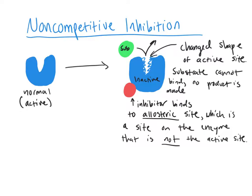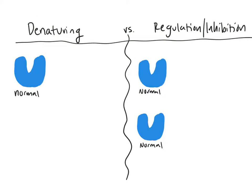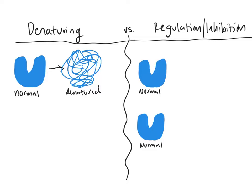I definitely want to mention that even though the active site is being changed here, it's not like denaturing where it's permanent — this is a reversible process. Let's take a look and compare denaturing to regulation or inhibition. Denaturing is when you take a normal enzyme and you completely destroy it. As you can see in the denatured protein, the active site has changed, but what's different is that the damage is permanent. This is not reversible — once an enzyme is denatured, it can't go back to normal.